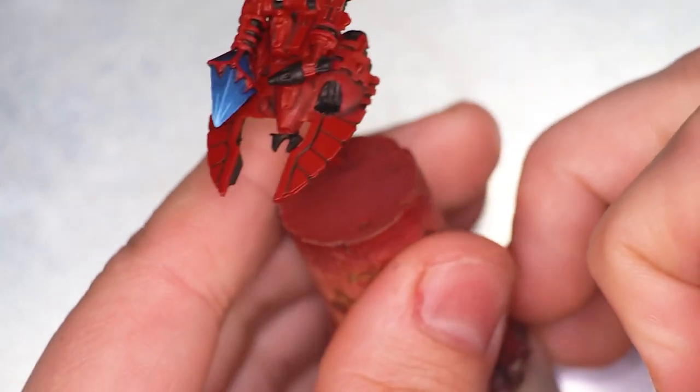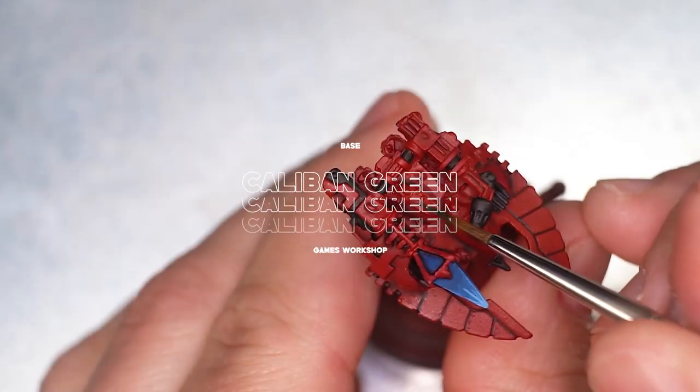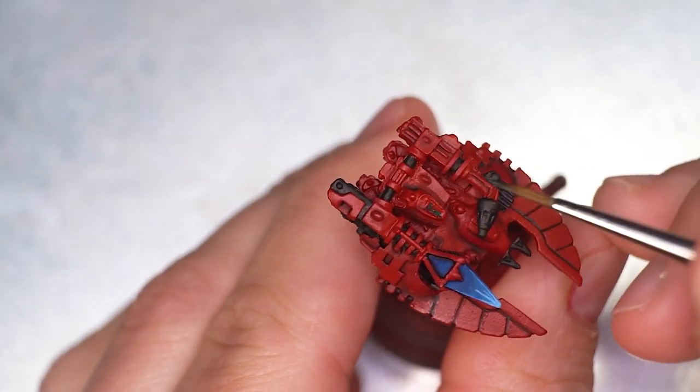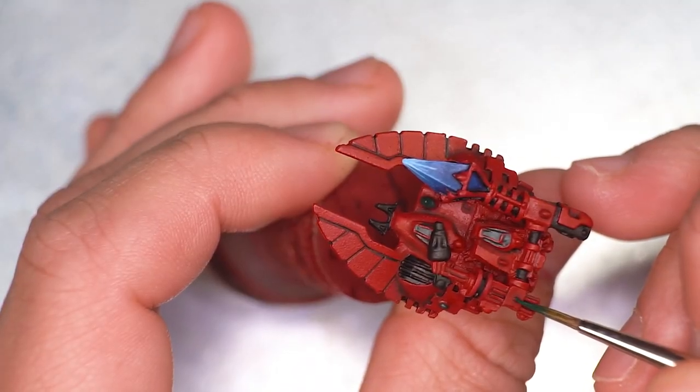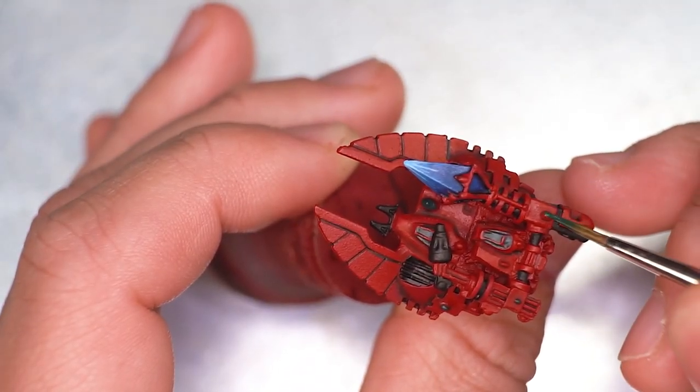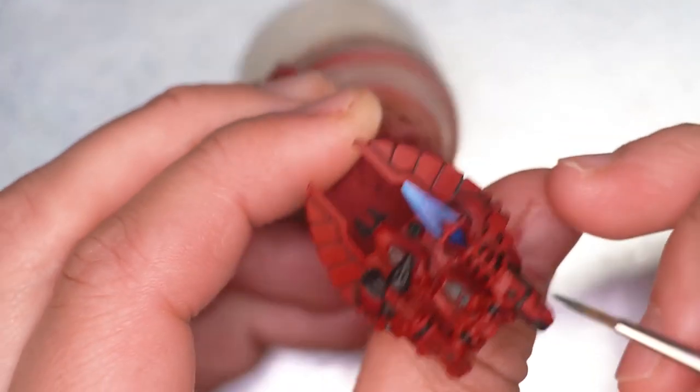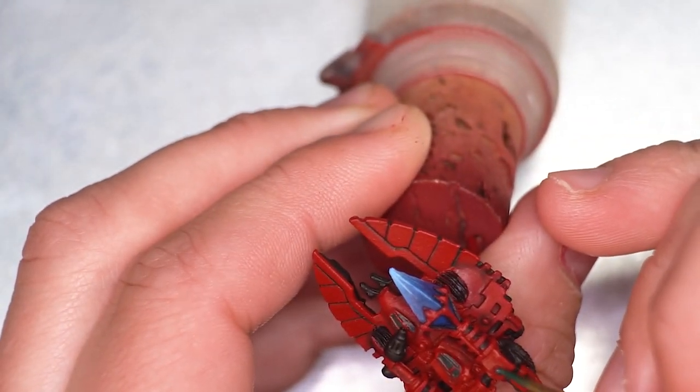I then moved on to base coat the soul gems on the grav tank. We're going to be using a very dark green because these soul crystals have a lot of contrast from dark to light so we're going to get the dark tone down first. Now you can do these soul gems in a purple, blue, yellow, whatever you want but I decided to just go with green.